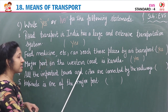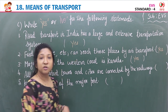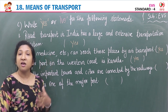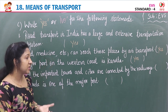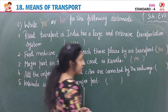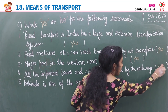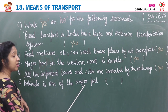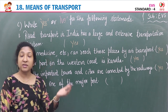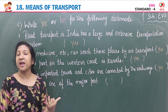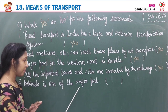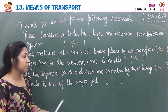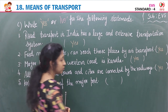Statement four: All the important towns and cities are connected by the railways. Most important cities and towns are connected by railways, so this is a true statement. Write yes. Statement five: Kakinada is one of the major ports. Kakinada is actually a non-major port, not a major port, so this statement is wrong. Write no.